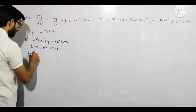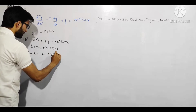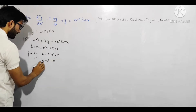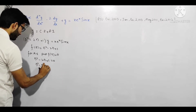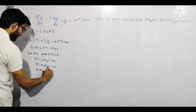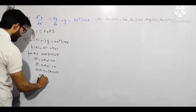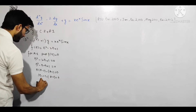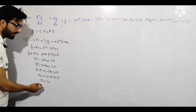Auxiliary equation: D² - 2D + 1 = 0. Isko middle term split karke solve karte hain: D² - D - D + 1 = 0, jo factor hoga (D - 1)(D - 1) = 0. Therefore D = 1, 1. Roots real hain aur repeated hain — iota nahi hai.